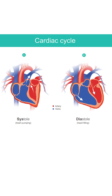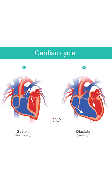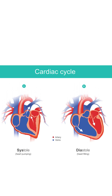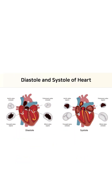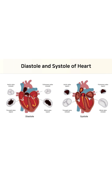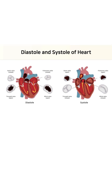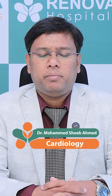Blood pressure is the pressure exerted by blood on the walls of the arteries when the heart pumps blood into the arteries. The normal blood pressure has two readings: one is systolic and the other is diastolic. Normal blood pressure is less than 120 by 80.